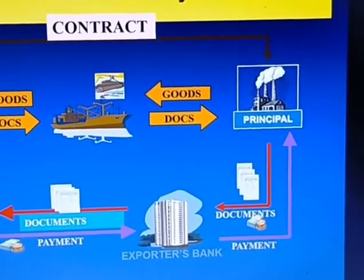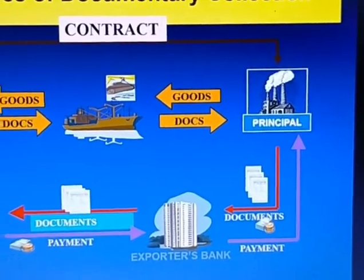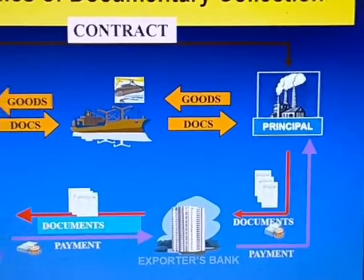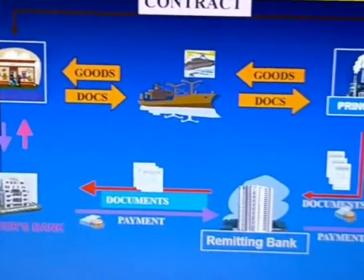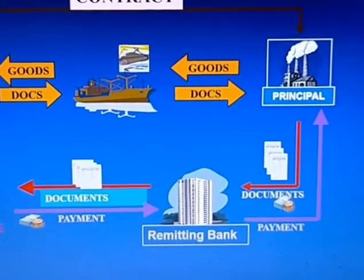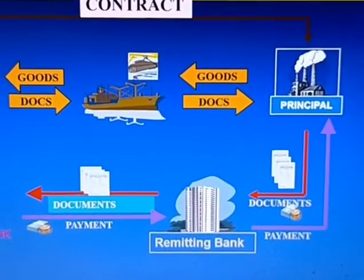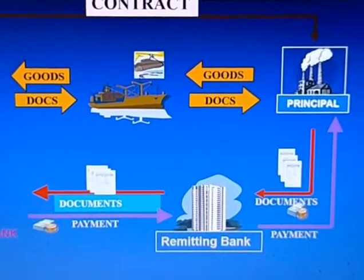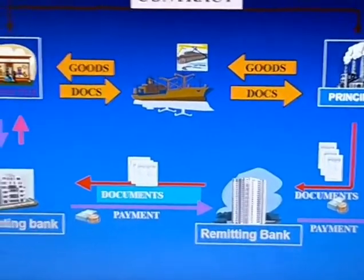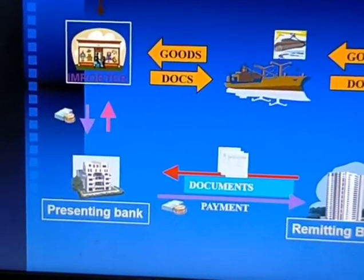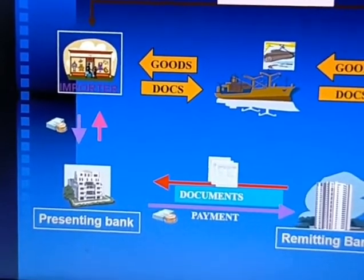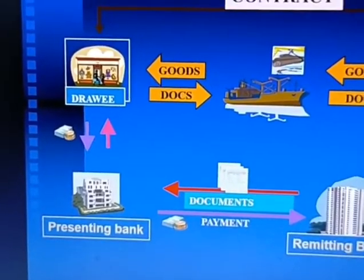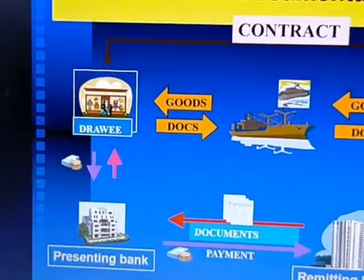Please note the parties involved: the exporter is called the principal. The principal's bank is called the remitting bank. The importer's bank is called the presenting bank. And the importer is called the drawee.